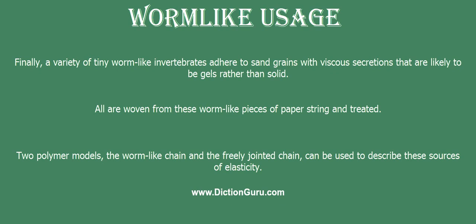Two polymer models, the worm-like chain and the freely jointed chain, can be used to describe these sources of elasticity.